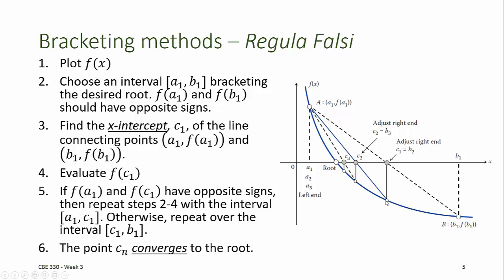Then, finding the intercept of the line connecting a1, f at a1 to the point c1, f at c1. That's our second estimate for the root. And in the third iteration,